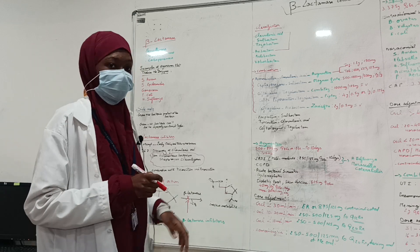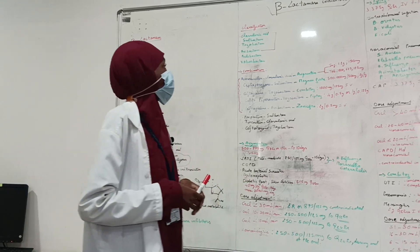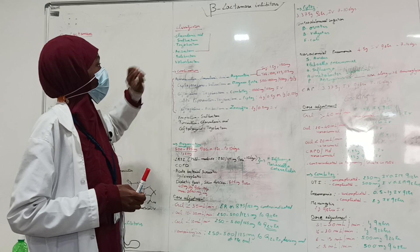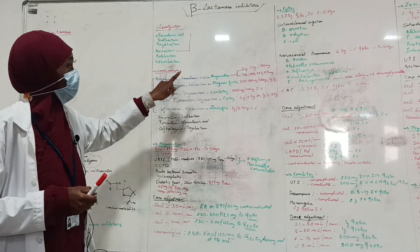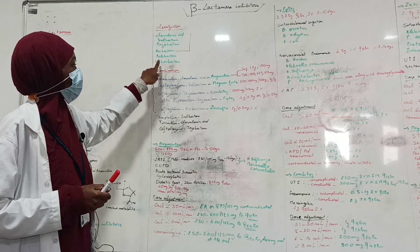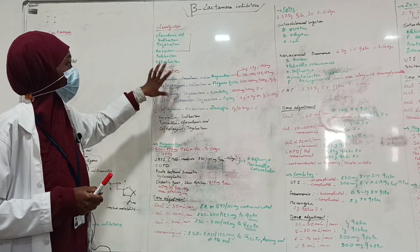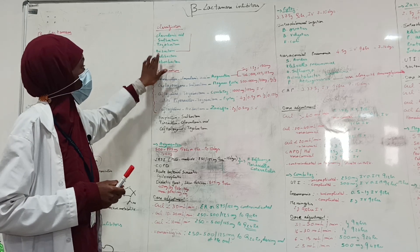Let's see the classifications. The first one to have been discovered was clavulanic acid. After that, we have sulbactam, tazobactam, avibactam. We have others, newer ones, like relebactam and vaborbactam, but we'll be focusing only on the first four.